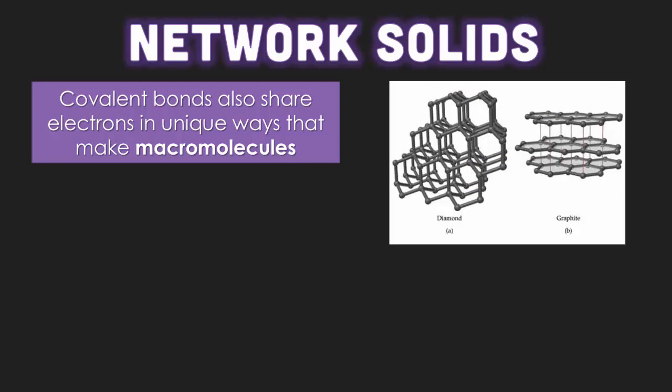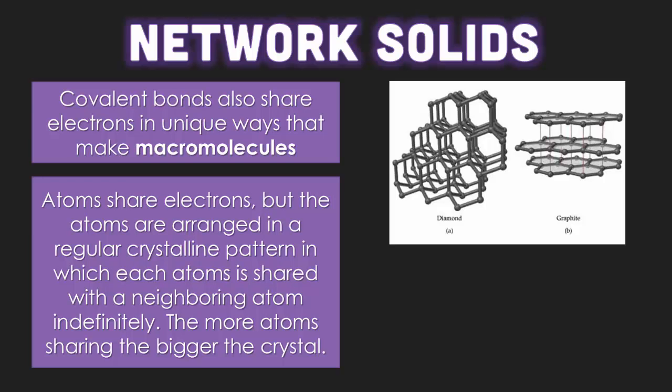Covalent bonds also have the unique ability to form something called a network solid, which we call a macromolecule. Macro means large, so these covalent molecules are going to be very large. The atoms share their electrons and are arranged in a regular crystalline pattern, much like an ionic crystal, in which each atom is shared with a neighbor atom indefinitely. The more atoms being shared, the bigger the crystal.